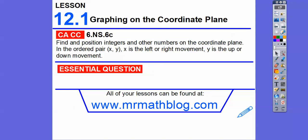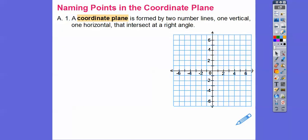Our question here is: how do we locate and name points in the coordinate plane? Let's talk about the coordinate plane. The coordinate plane is formed by two number lines — one goes vertical, which is up and down.